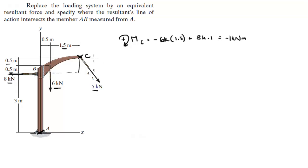Now sum of the forces in the x is equal to minus 8k plus 5k times 3 over 5, which is equal to minus 5k. Sum of the forces in the y is equal to minus 6k minus 5k times 4 over 5, which is equal to minus 10k.